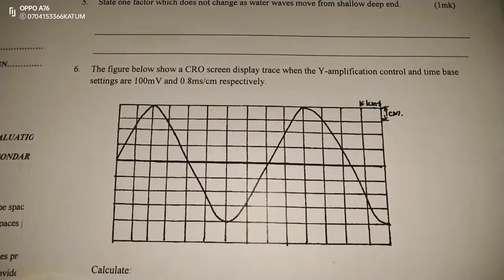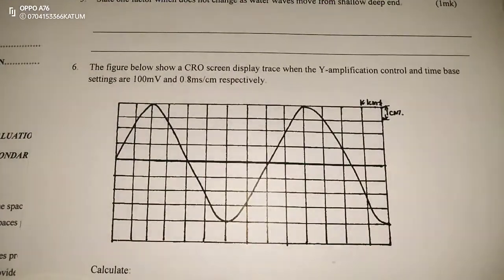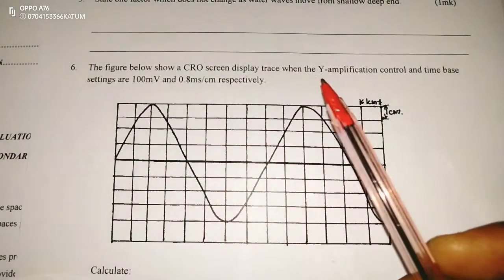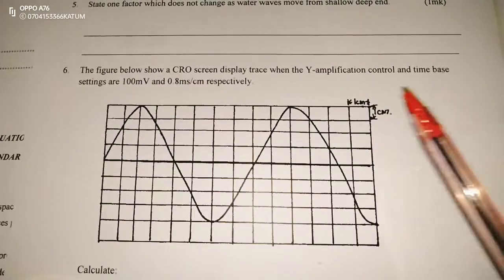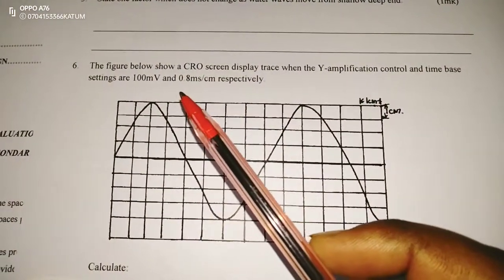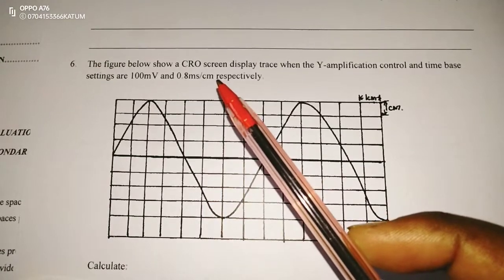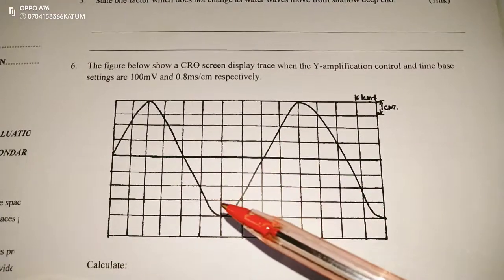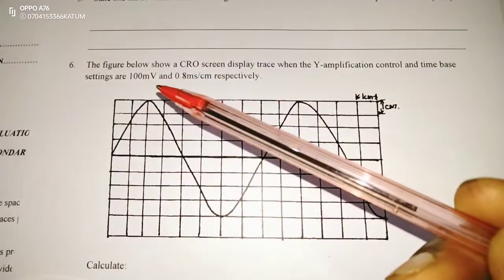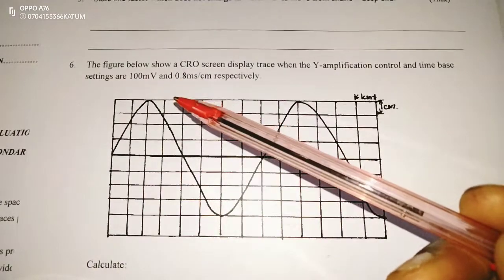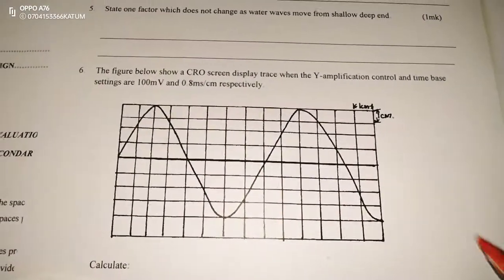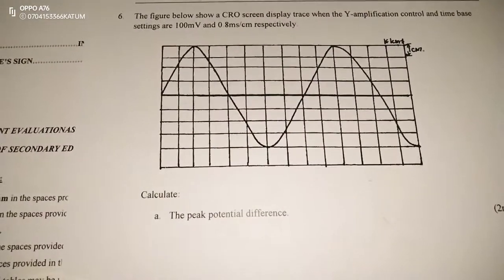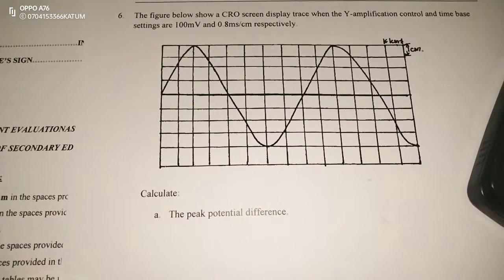Thank you for joining this lesson. We're going to look at some physics. We are told that the figure below shows a CRO screen display trace when the Y-amplification control and the time-based settings are 100 millivolts and 0.8 milliseconds per centimeter, respectively. Therefore, in the Y-amplification control, we have 100 millivolts, and in the time-based, which is the x-axis, we have 0.8 milliseconds per centimeter.